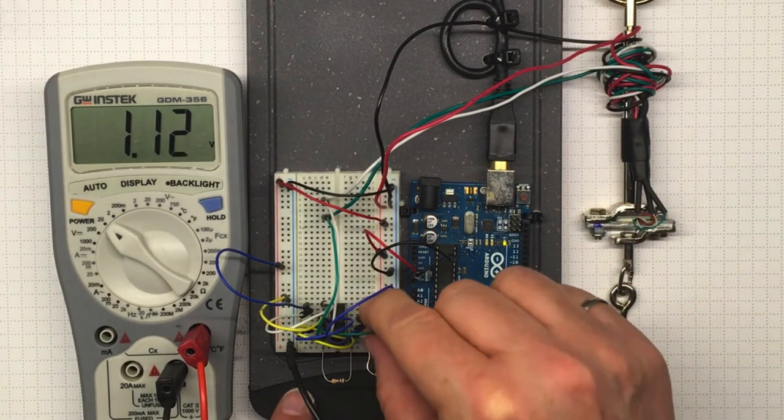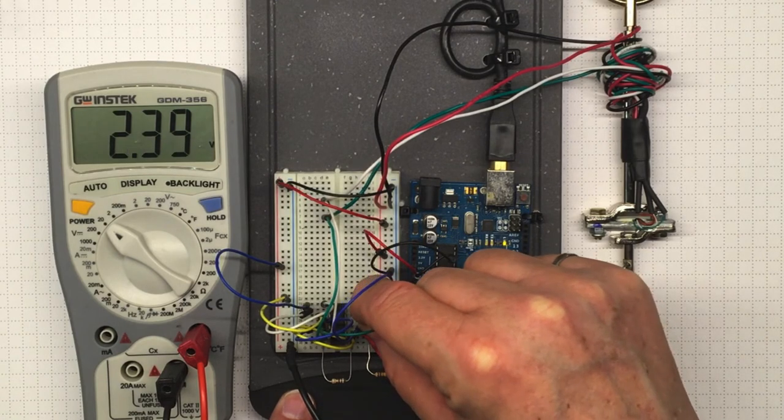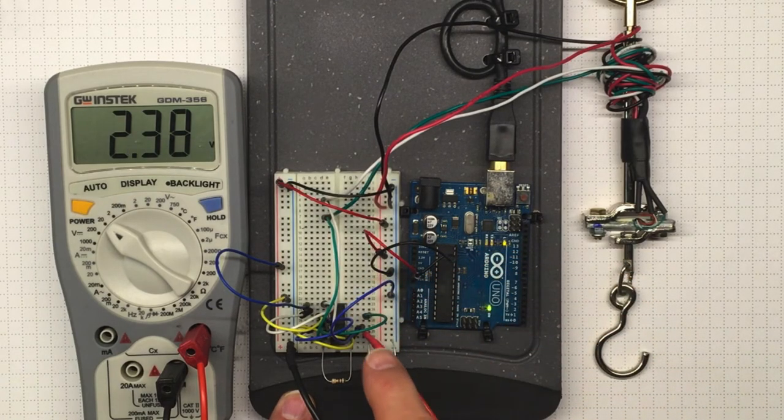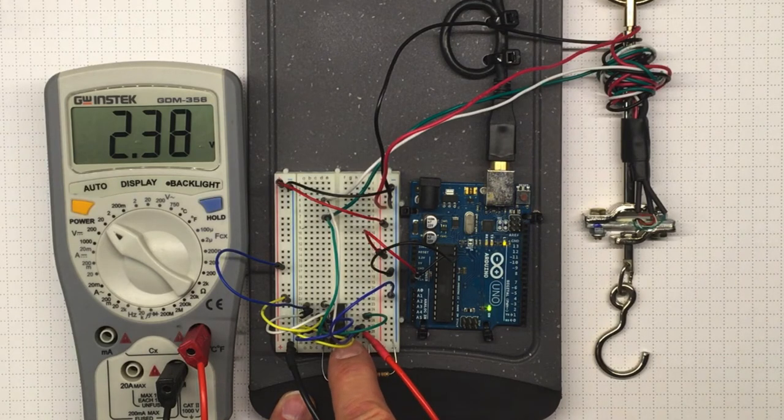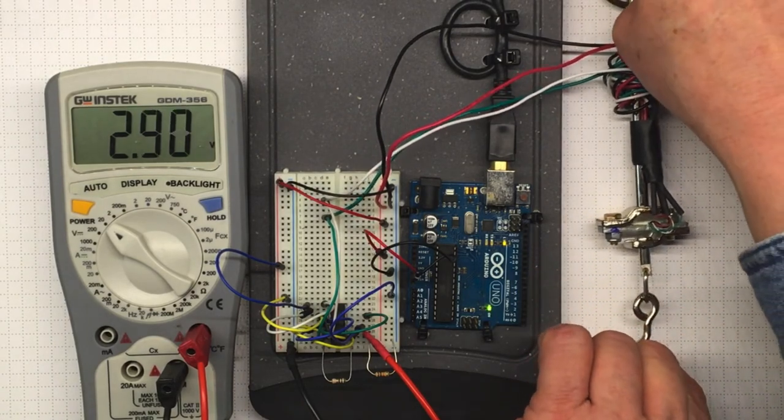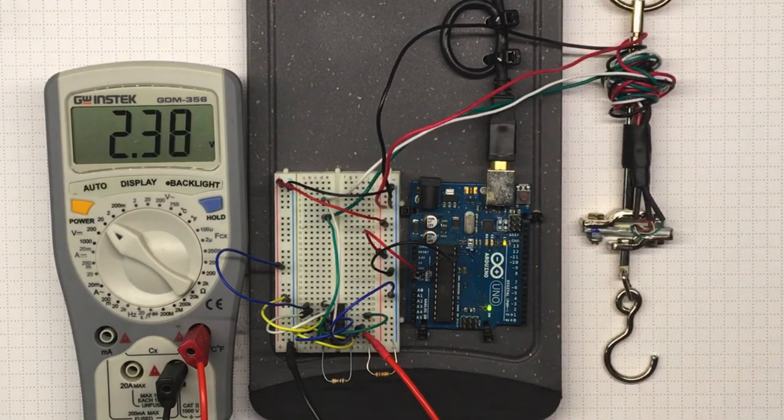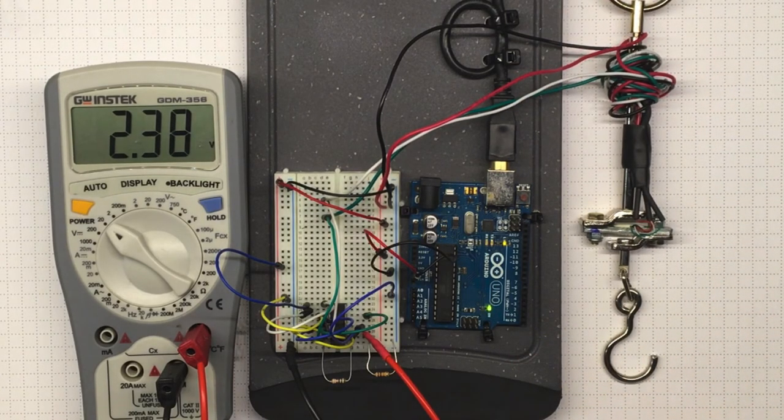So the pseudo-ground, by changing this connection from, say, pin 13 to pin 14, I can change the reference voltage of the output. But the gain will remain the same. The amount of voltage change remains the same. It's just the size of the offset that represents 0.